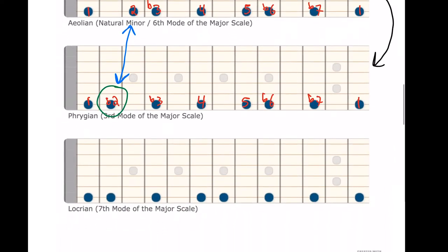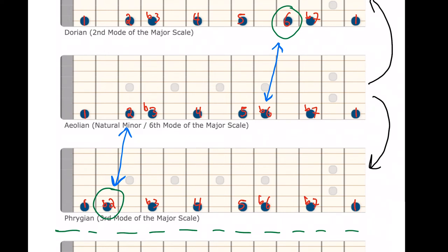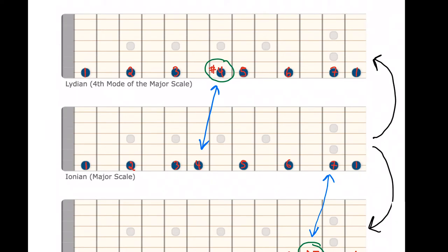Because there are seven notes in the major scale, you get seven modes — one for each scale degree called 'one.' Locrian is the seventh mode: one, flat two, flat three, four, flat five, flat six, flat seven. The flat five is the really distinctive note, along with the flat two. Locrian is kind of the odd one out — it's not just one half step from either natural minor or the major scale — but it follows the same pattern of one note moving a half step from Phrygian.